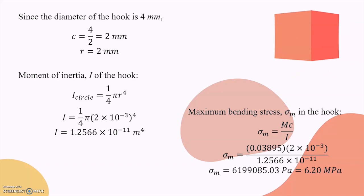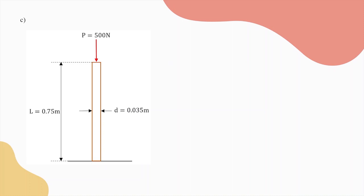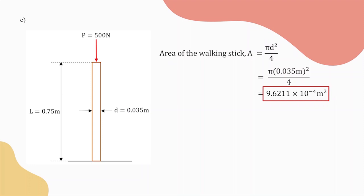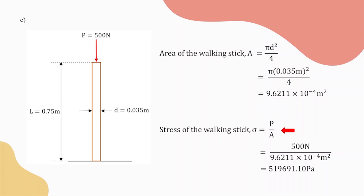In Part C, we want to figure out the stress and deformation of the walking stick of Timmy's grandfather. In order to calculate the stress of the walking stick, we need to find out its cross-sectional area. Since the walking stick has cylindrical strip, its cross-sectional area is equal to pi d squared over 4. By substituting the values of diameter of the walking stick into this formula, we will get 9.6211 times 10 to the power negative 4 meter squared for the cross-sectional area. After that, we can calculate the stress of the walking stick by using the formula P over A, where P represents the force applied. By substituting the values of P and A, we will know that the stress of the walking stick is 519,691.1 pascals.